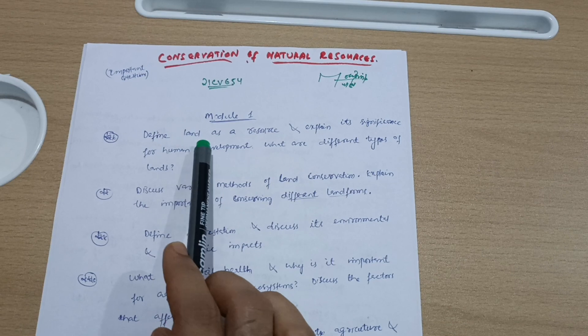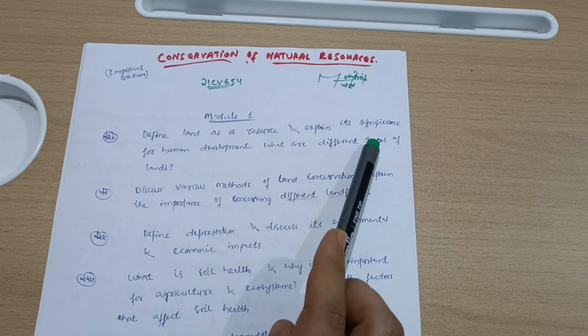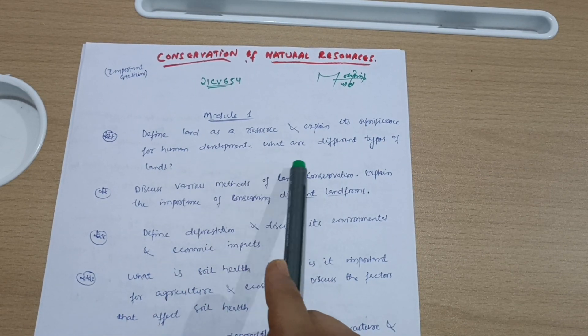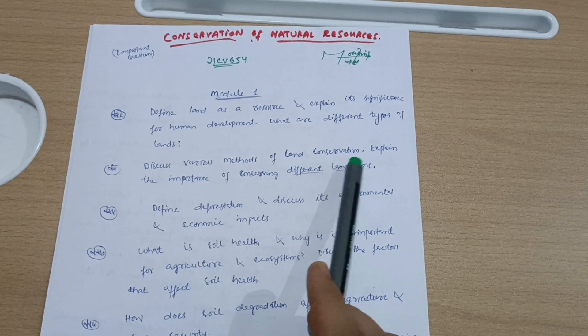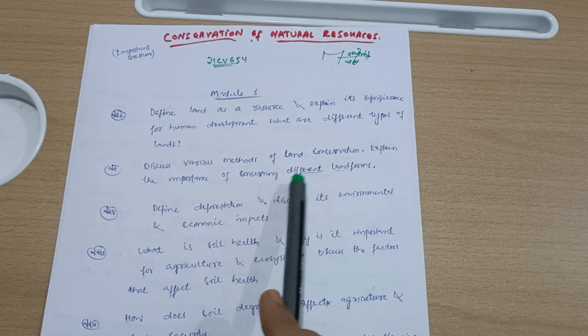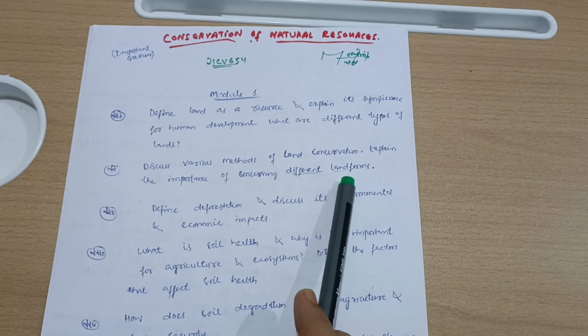First question: Define land as a resource and explain its significance for human development. What are different types of lands? Discuss various methods of land conservation. Explain the importance of conserving different landforms.